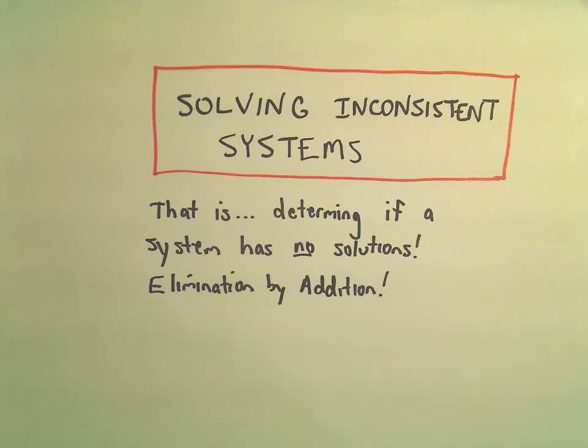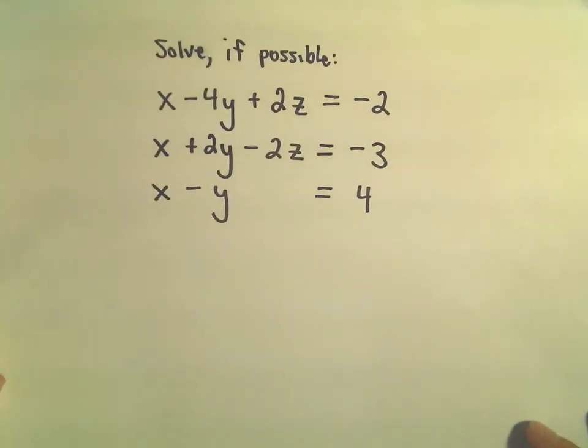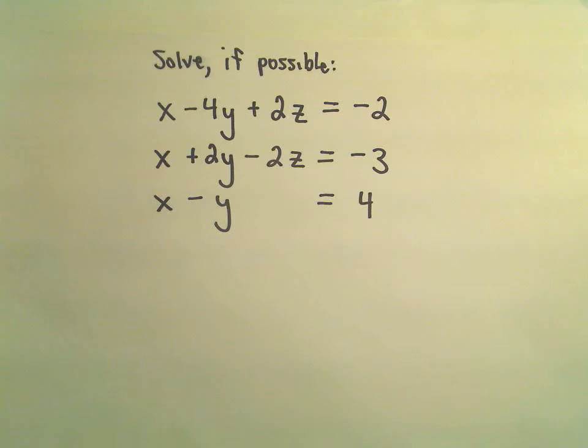Alright, so one more example here regarding inconsistent systems. What we're trying to do is determine if a system of linear equations in three variables has no solutions or if it does have a solution. We're using elimination by addition. So, we've got this system of equations.